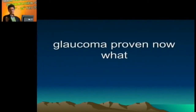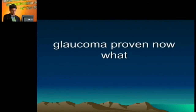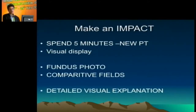So, glaucoma is proven. With limited resources, you have checked the disc, found a notch, and correlated it with perimetry — the notch is inferior, the field defect is superior, so you are pretty much dealing with glaucoma. You have done a gonioscope to find out what type of glaucoma it is. Spend five to ten minutes with each new patient — that is critical to build rapport.